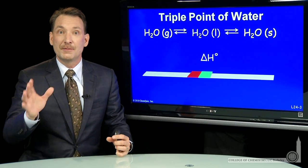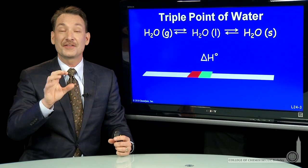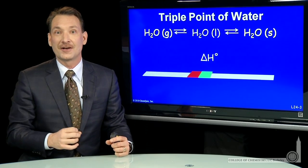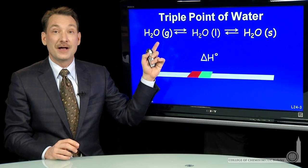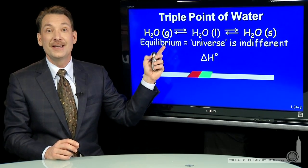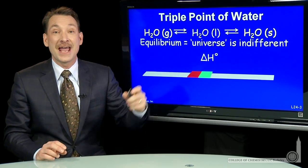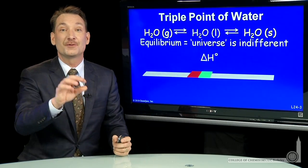And of course, that's correct. But the error there is we're only thinking about the system. We need to think about the system and the surroundings to calculate the total entropy. So as you go from liquid to gas, you need to calculate entropy for the entire universe, the system and the surroundings. At equilibrium, that entropy difference will be zero.